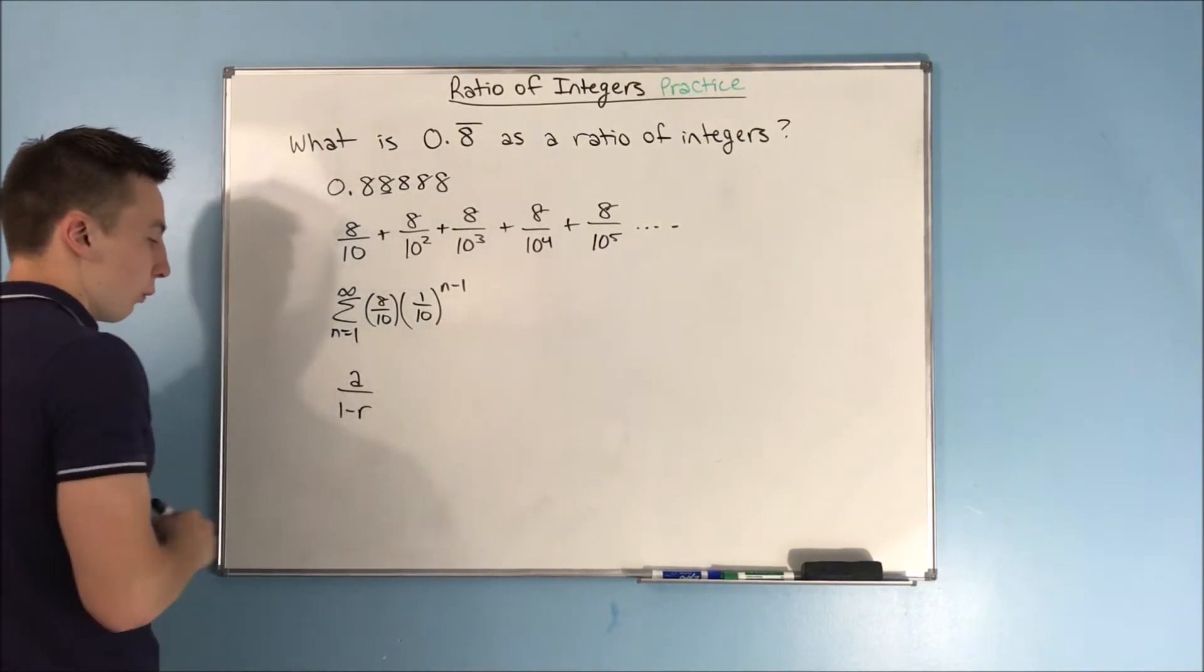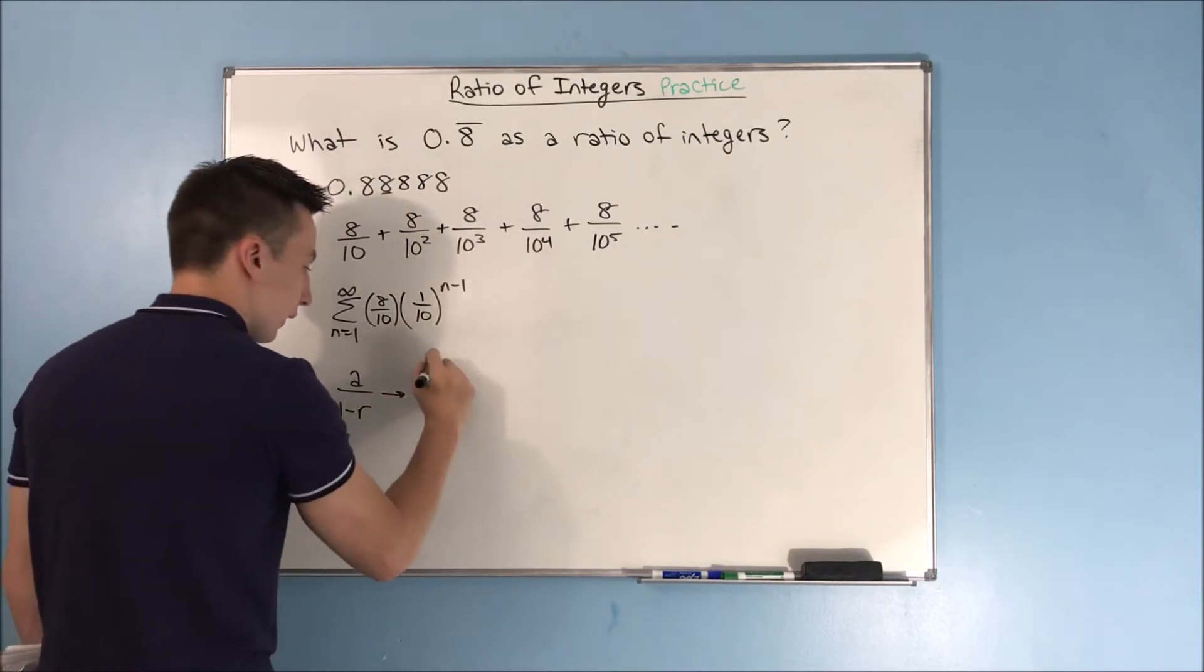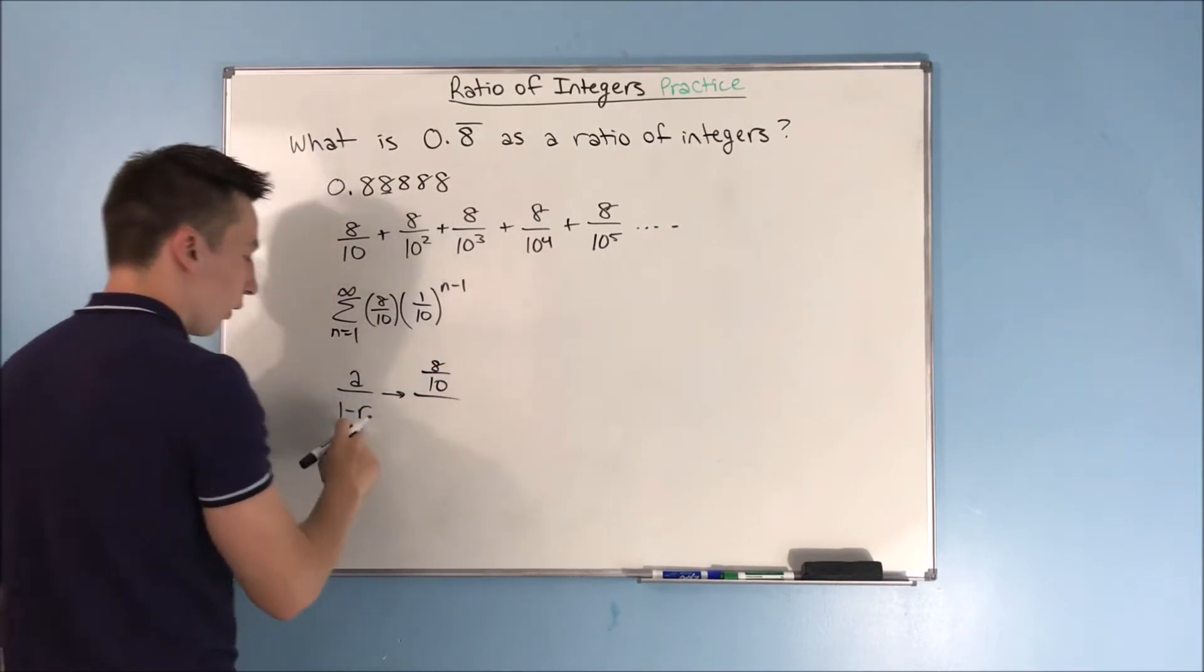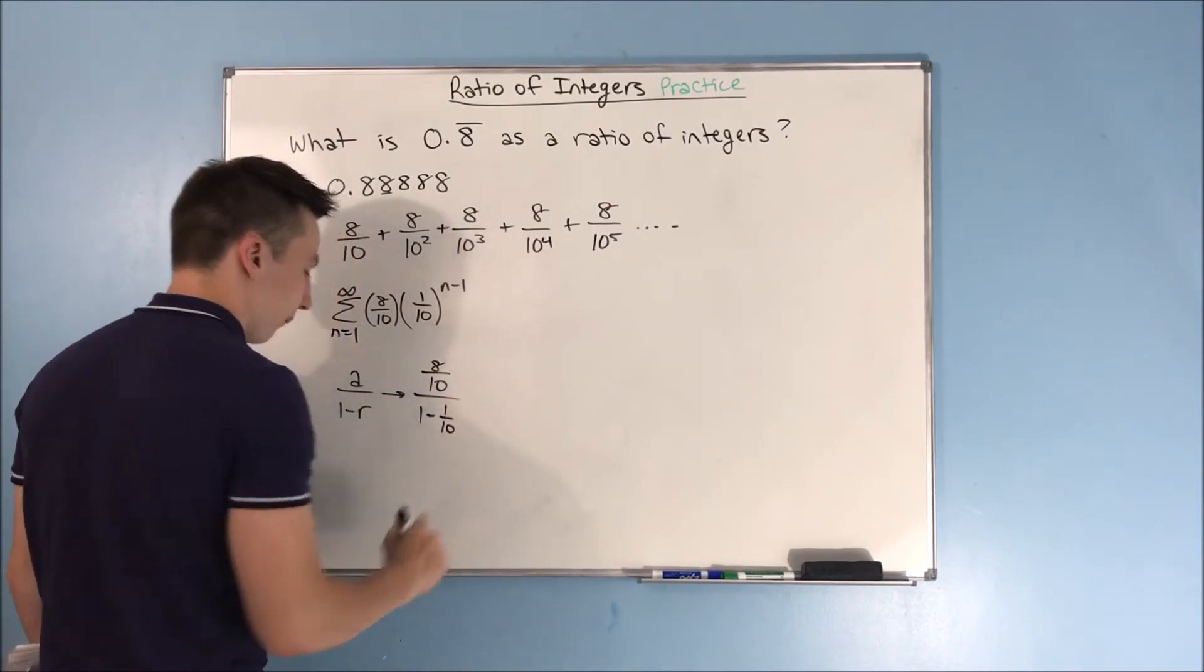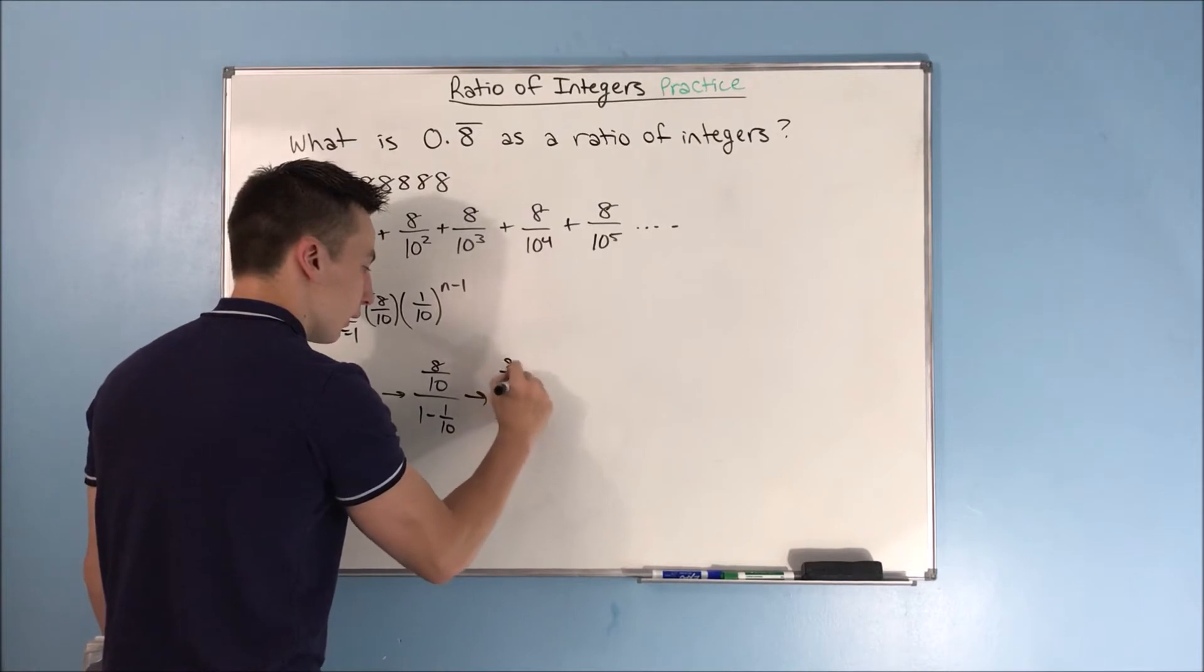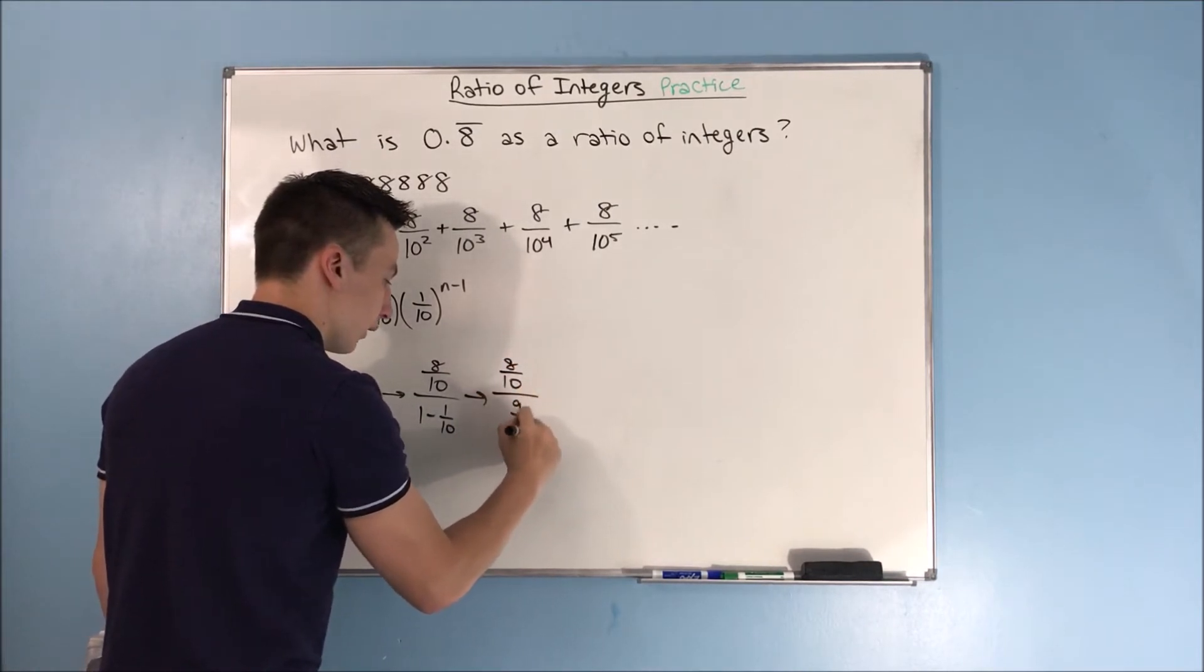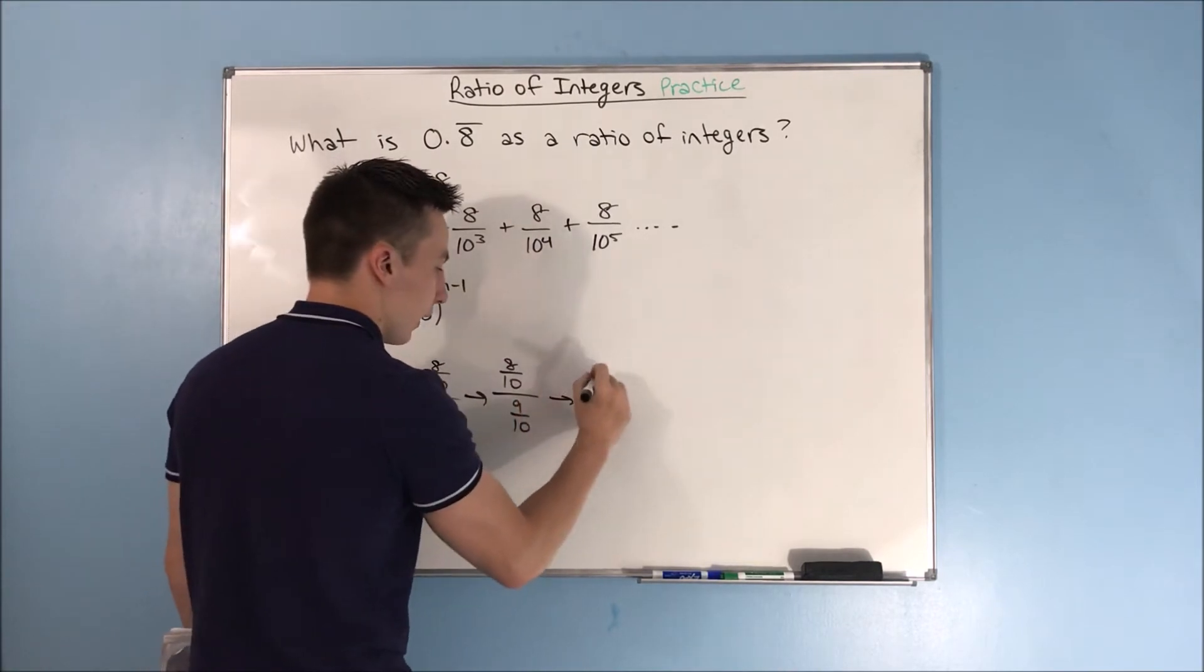Now, a over 1 minus r, we can say a is 8 over 10 and our r is 1 over 10, so that's 1 minus 1 over 10. We can rewrite this as 8 over 10 over 9 over 10. And that just becomes 8 ninths.